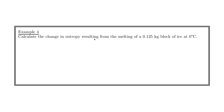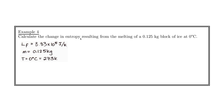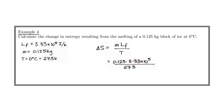Calculate the change in entropy resulting from the melting of a 0.125 kilogram block of ice at 0 degrees Celsius. To find the change in entropy, we need to know how much heat is involved. The heat involved in melting the ice is simply the mass of the ice times its latent heat of fusion, which is a constant we can look up or that would be provided. Substituting and solving, we get 152 joules per Kelvin.